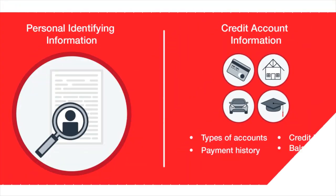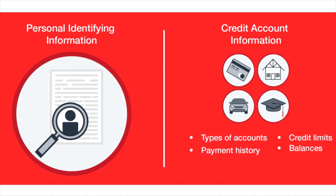Your Equifax credit report contains the following types of information. First, identified information — this section includes personal information such as your name, address, social security number, and date of birth. The identified information in your Equifax credit report is not used to calculate credit scores. Then you have credit account information, reported to Equifax by your lenders and creditors, including types of accounts such as credit card, mortgage, student loan, or vehicle loan; the date those accounts were opened; your credit limits or loan amounts; account balances; and payment history. This section may not contain all your credit accounts due to closed accounts dropping off after a certain period, or accounts not reported to Equifax by lenders.